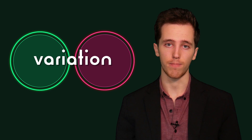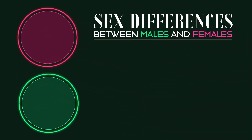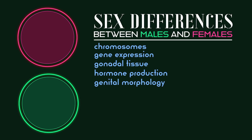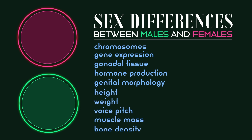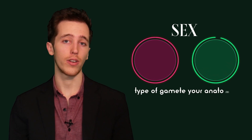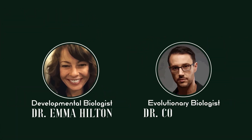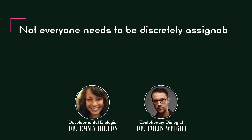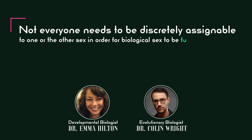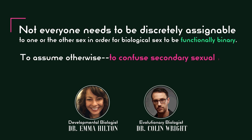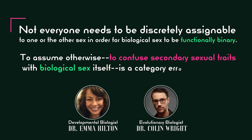Thanks to the master switch SRY gene, we can see that sex determination is entirely dimorphic. However, this does not exclude variation within the binary system. Sex differences between males and females are commonplace — there is variation of chromosomes, gene expression, gonadal tissue, hormone production, genital morphology, height, weight, voice pitch, muscle mass, bone density, and more. But no matter the variation of traits, the principle remains: sex is defined by the type of gamete your anatomy is organized to produce. Two gamete types, two sexes. As Hilton and Wright note: "Not everyone needs to be discretely assignable to one or the other sex in order for biological sex to be functionally binary. To assume otherwise — to confuse secondary sexual traits with biological sex itself — is a category error."